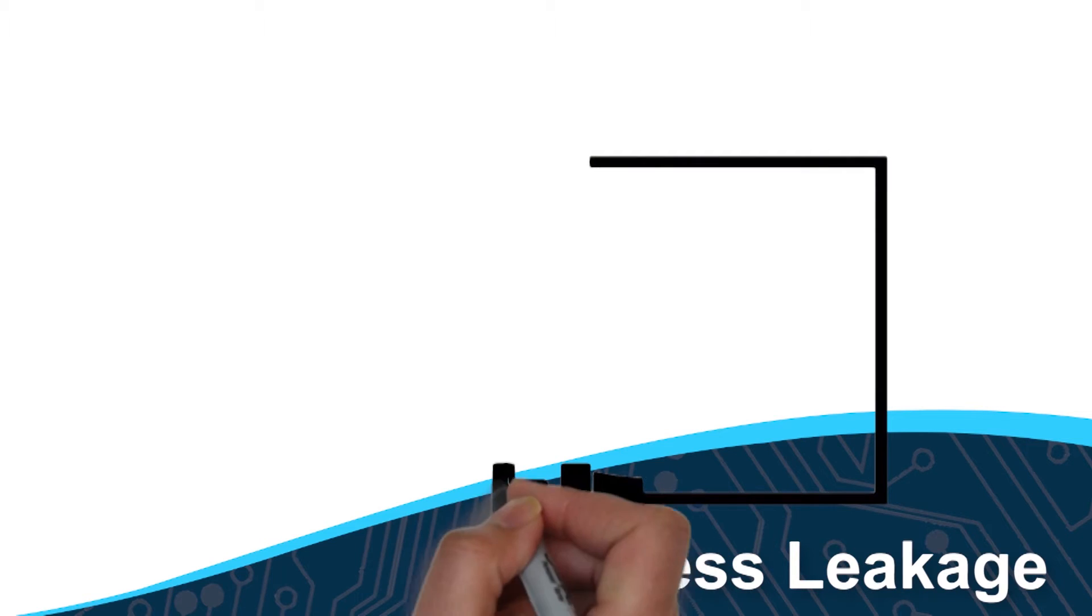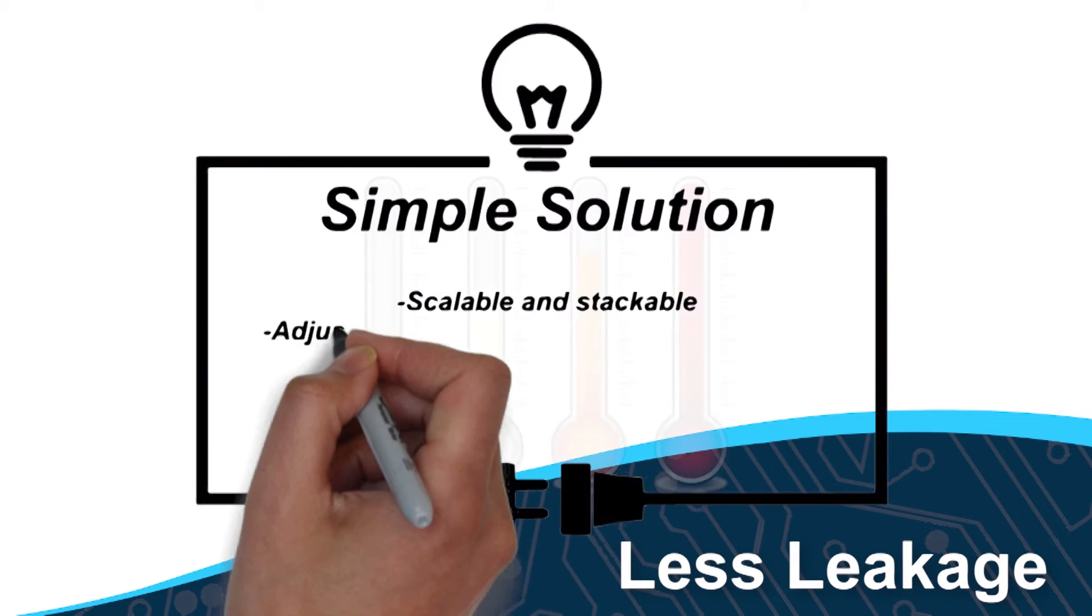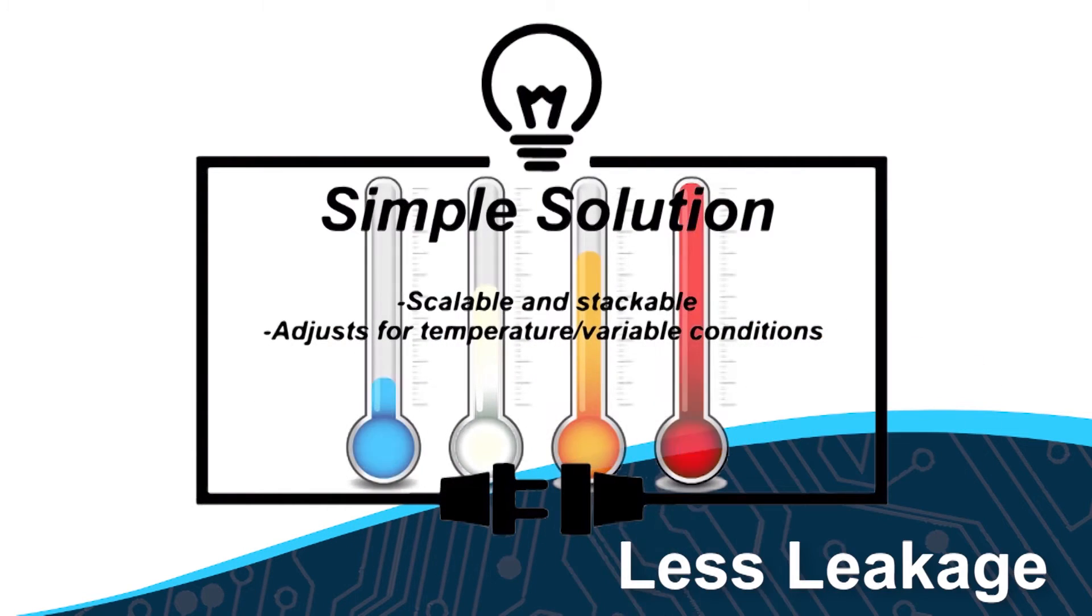SAB MOSFETs balance supercapacitors with less leakage current in a simple solution that is scalable and stackable and adjusts for changing temperature and other variable conditions.